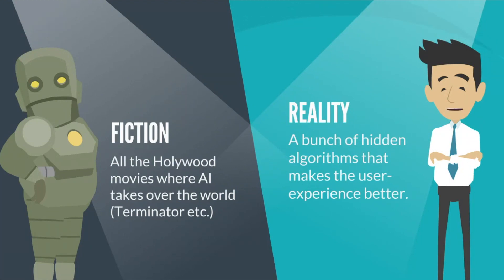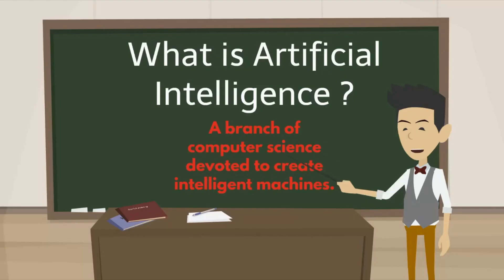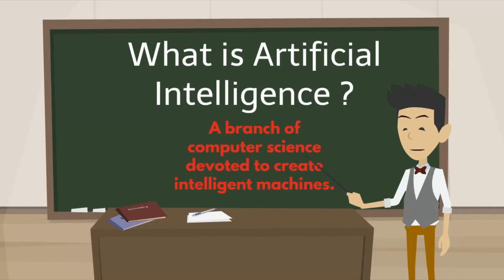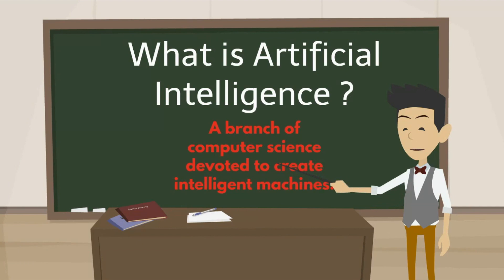For example, Amazon is predicting the products that you might want to buy thanks to an AI system. Artificial intelligence is a branch of computer science that aims to create intelligent machines, and it has become an essential part of the technology industry.